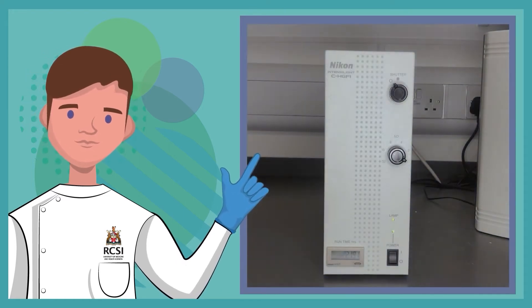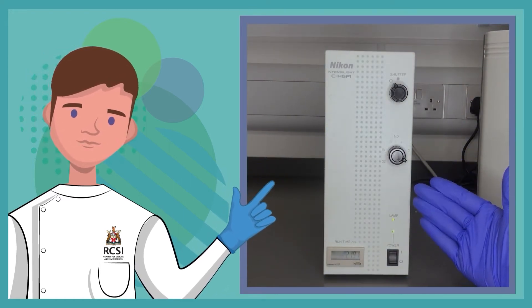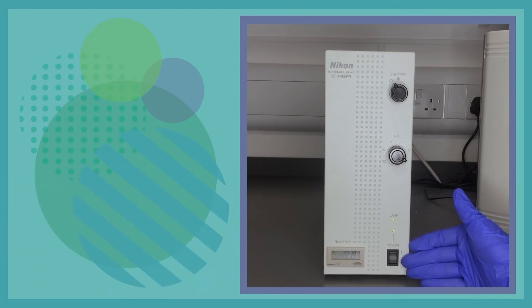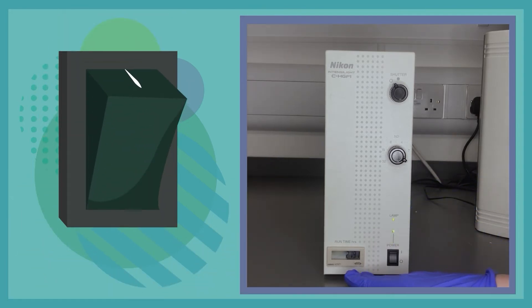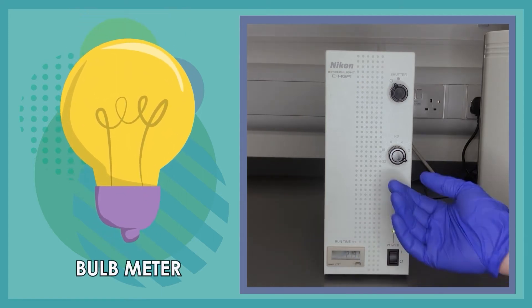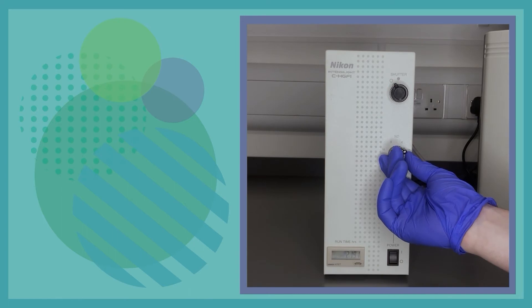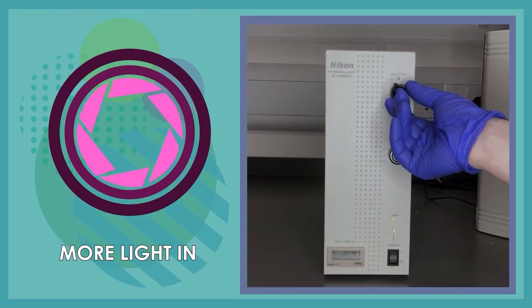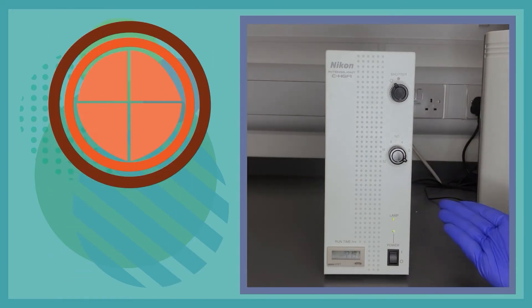So first we'll look at a light box for the microscope. There are different controls we need to know. First, the power switch which turns it on. This is the bulb meter which indicates the lifespan in hours of the bulb. This knob allows us to adjust the amount of light passed through the filter, and this allows us to open and close the shutter.